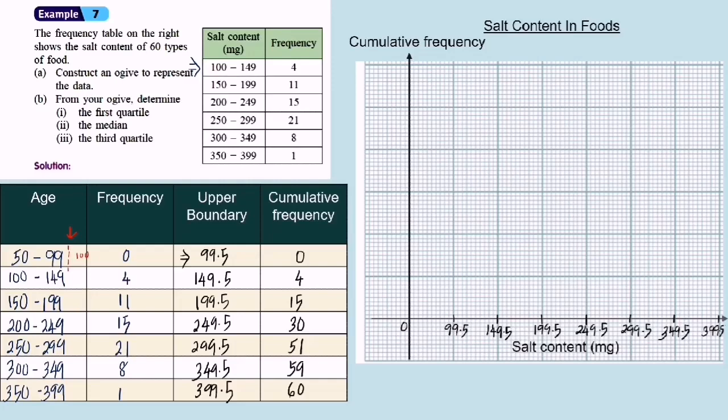For the vertical axis, we check the highest number of the cumulative frequency, which is 60. So we start with 10, 20, 30, 40, 50, and 60. After we label the horizontal axis and vertical axis, now we start to plot the points.